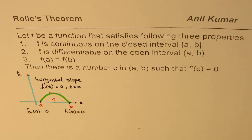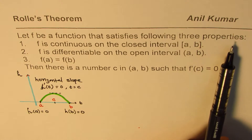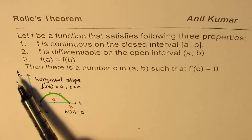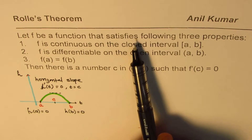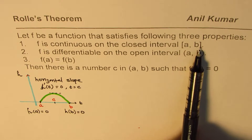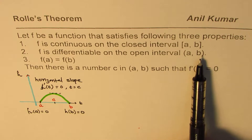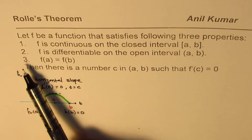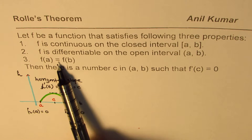Now let's look at the definition of the theorem. Let f be a function that satisfies the following three properties. First, f is continuous on the closed interval [a, b], that is including a and including b. Second, f is differentiable on the open interval (a, b), not including a or b. Third, the value of the function at a equals the value at b, that is f(a) = f(b).